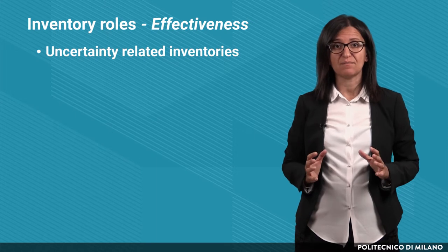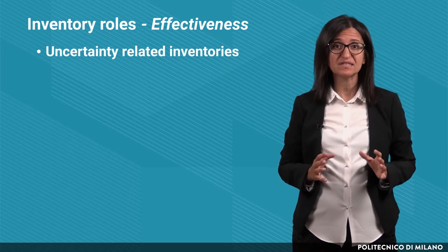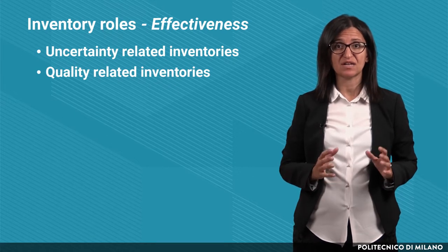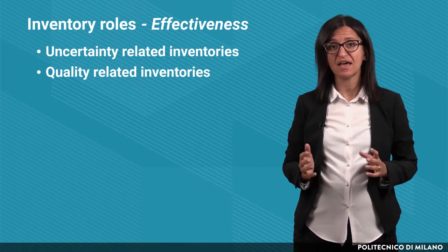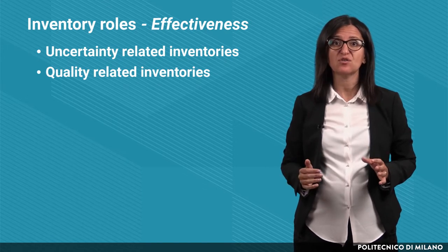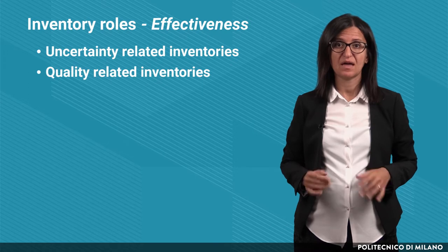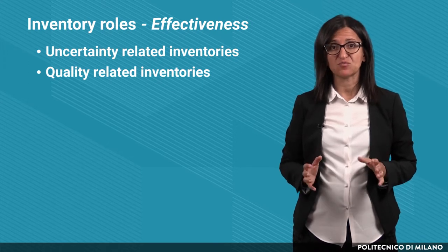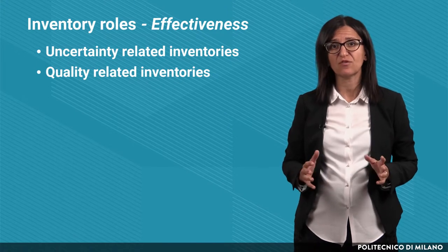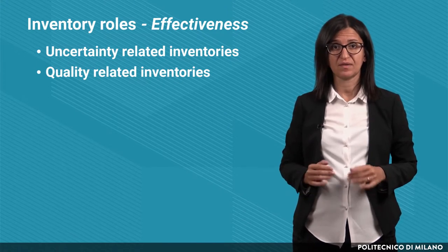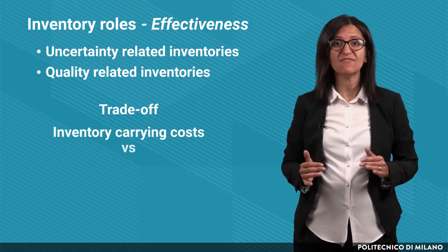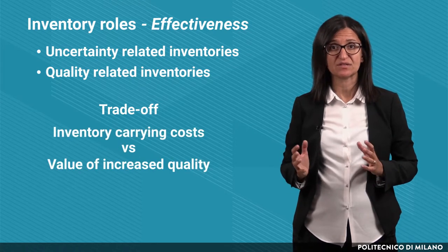A different example is that of inventories related to product quality. This is the case of some types of food, like cheese, ham, or wine, that require being stocked for a certain amount of time in order to improve their quality. This is also the case of products that need a quarantine before being sold, like pharmaceutical products. The trade-off is between the inventory carrying costs and the value deriving from the increased quality.